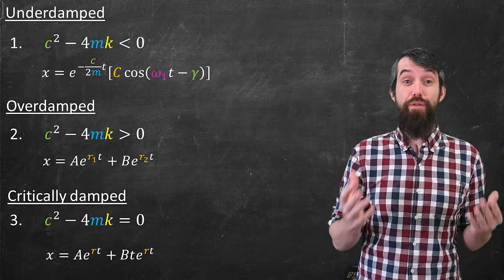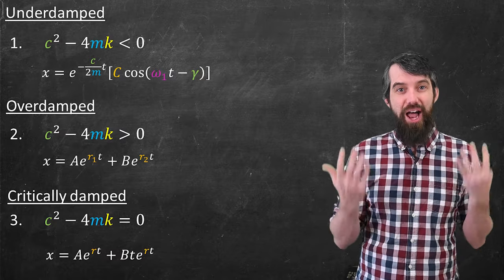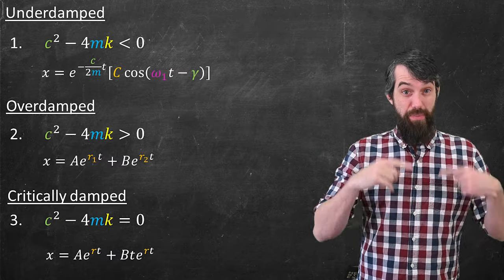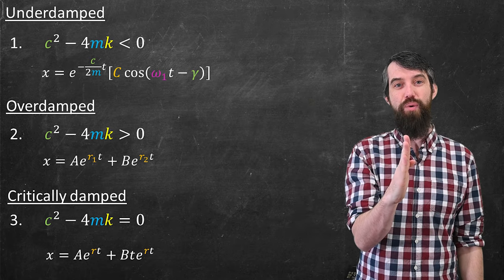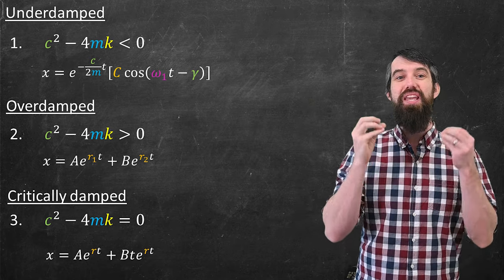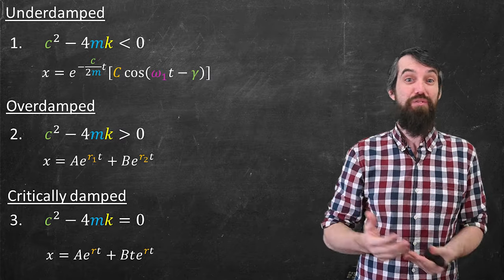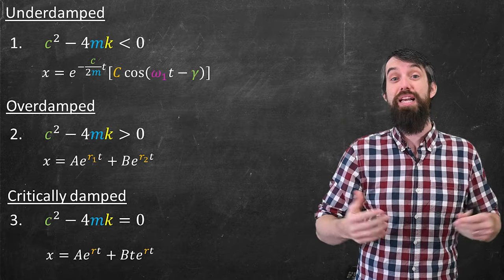Alright, so in the end, the mechanical vibrations with friction can have these three different cases. The underdamped case, where you do have these sort of nice oscillations, the overdamped case, where it's just this exponential decay back to the equilibrium point, and this kind of funky, critically damp case. So if you enjoyed this video, please do give it a like for the YouTube algorithm. If you have any thoughts or questions, leave them down in the comments below, and we'll do some more math in the next video.